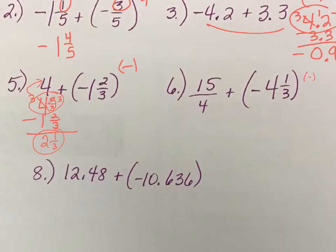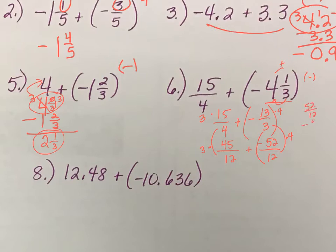We're going to subtract these. So let's make this one improper. It's 15 over 4 plus negative 3 times 4 is 12, 12 plus 1 is 13 over 3. Get a common denominator, which is going to be 12. 15 times 3 is 45. 13 times 4 is 52. So we're going to take 52 over 12 minus 45 over 12, and we get 7 over 12. Take the sign of the 52, which is negative.